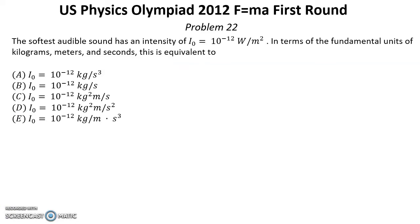Problem number 22. The softest audible sound has an intensity of I0 equal 10 power negative 12 W per meter square. In terms of the fundamental units of kilograms, meters and seconds, this is equivalent to which one? We have five choices.